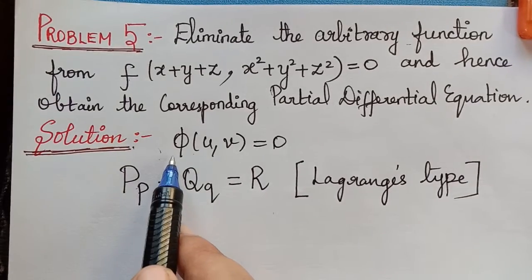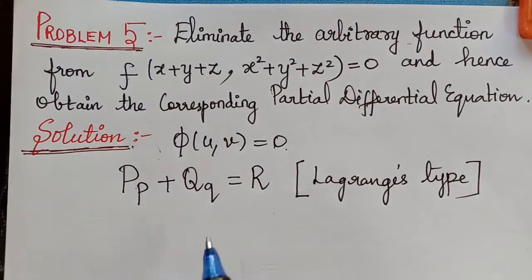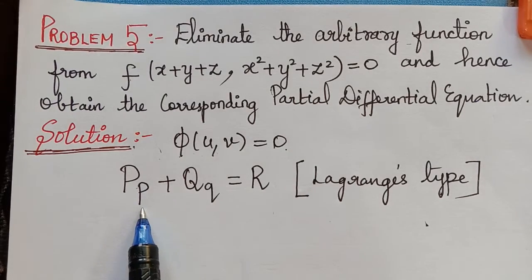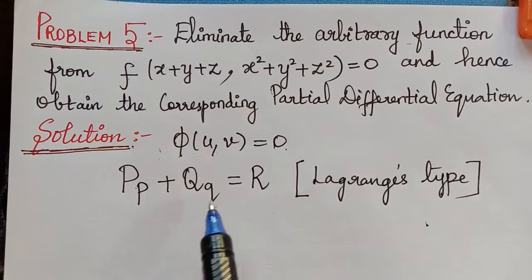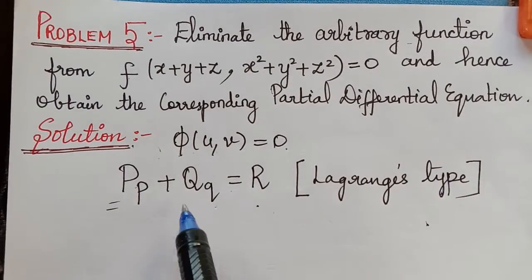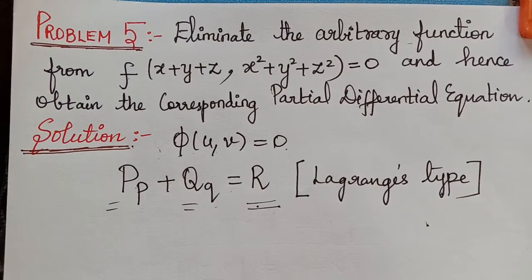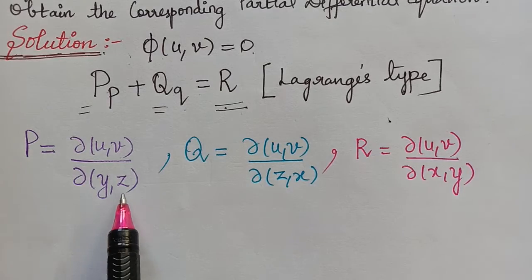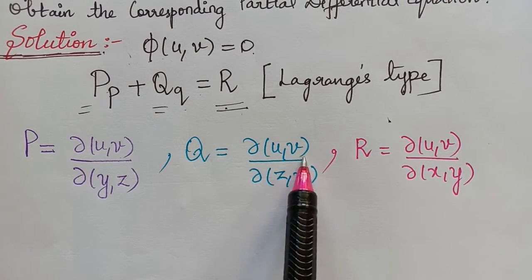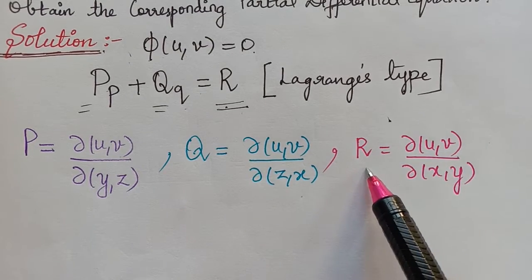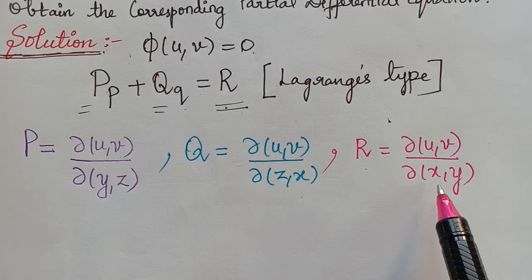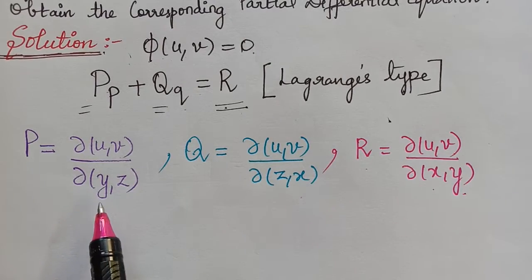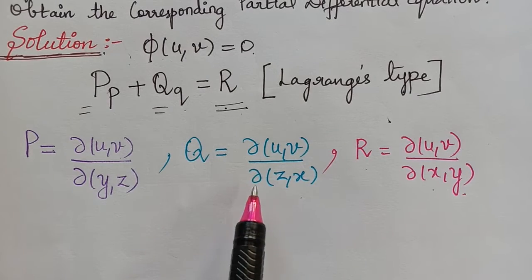Whenever you have the solution of the form φ(u, v) = 0, the partial differential equation will be of Lagrange's type: Pp + Qq = R. Here, capital P is given by the Jacobian of (u, v) with respect to (y, z); capital Q is the Jacobian of (u, v) with respect to (z, x); and capital R is the Jacobian of (u, v) with respect to (x, y). We find these values by taking the determinant, as we have already learnt about the Jacobian.